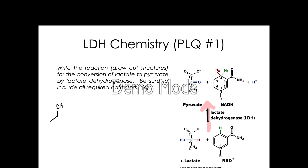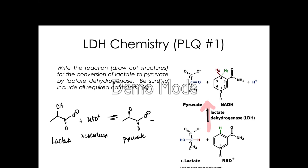Here's the structure of lactate. A necessary cofactor is NAD+, and a key here is that NAD+ is going to be colorless. This is a reversible reaction, and we use it to generate the 3-carbon molecule pyruvate plus NADH. The key here is that NADH is going to be yellow colored.